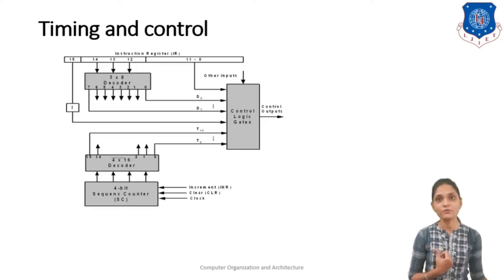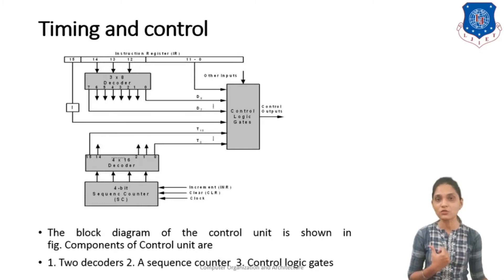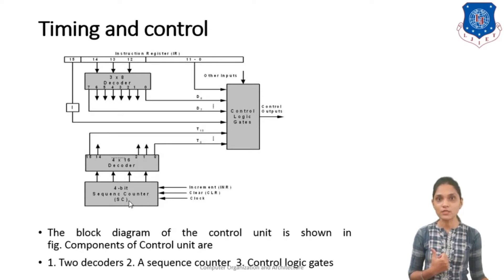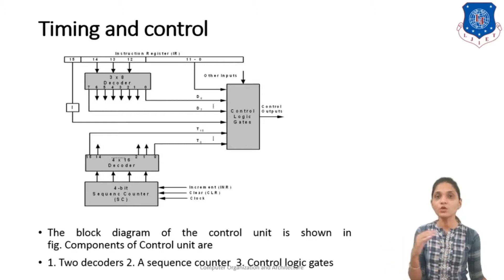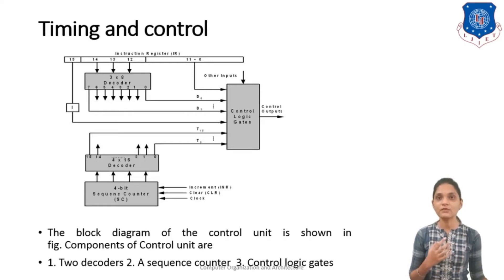Here this is the block diagram for your timing and control signal generation. It consists of two decoders: a 3x8 decoder and a 4x16 decoder. We have used one sequence generator — this is the 4-bit sequence generator that can generate from 0000 to 1111. Then we have used the control logic gate for providing some control. So this is our basic circuit that we can use for this timing and control generation.